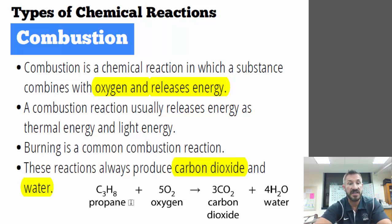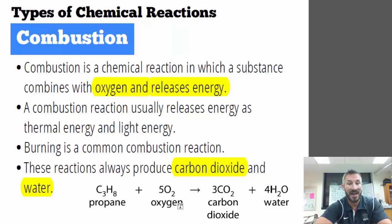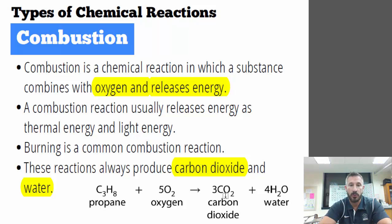An example: propane, often used in gas grills, has the formula C₃H₈. It combines with diatomic oxygen, and the products of that reaction are carbon dioxide and water. That is an example of a combustion reaction.